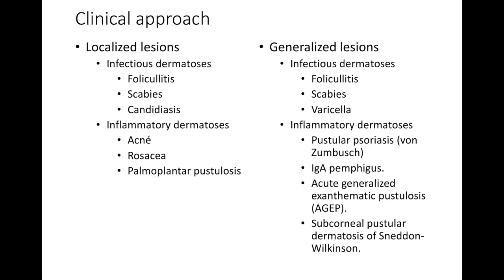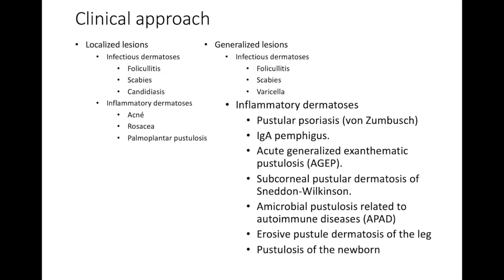The most important entities to consider are pustular psoriasis, IgA pemphigus, acute generalized exanthematous pustulosis, and another entity called subcorneal pustular dermatosis of Sneddon-Wilkinson, which is thought to be part of the spectrum of pustular psoriasis and IgA pemphigus. There are many others, like amicrobial pustulosis related to immune diseases, erosive pustular dermatosis of the leg, or multiple pustular conditions of the newborn, but due to their lower frequency and age-specific presentation, we did not consider them for the differential diagnosis.